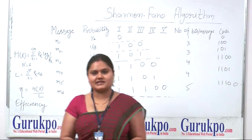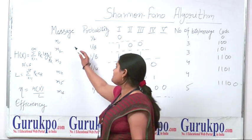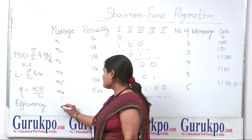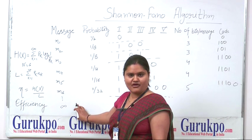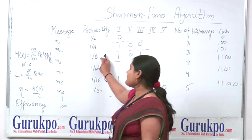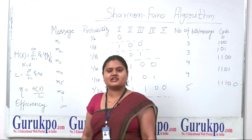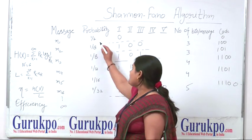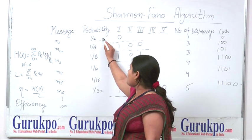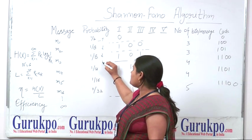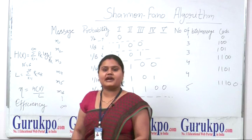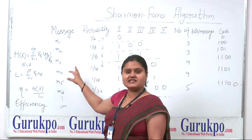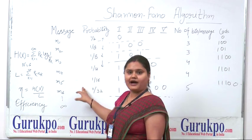We are using a message signal, denoted by M1, M2, M3, up to M6 or infinite numbers. Correspondingly, we have to arrange the probabilities in decreasing order — higher probabilities on top and lower probabilities on the lower side. Firstly, we calculate our message signal and corresponding probabilities, then arrange them according to decreasing probability.